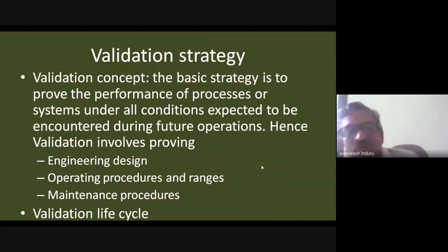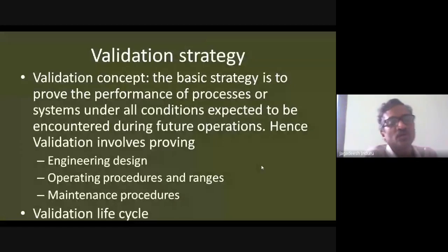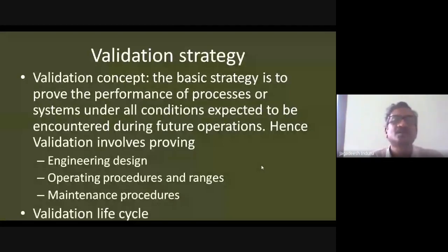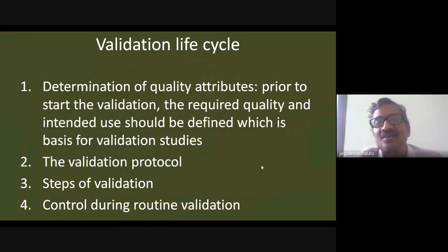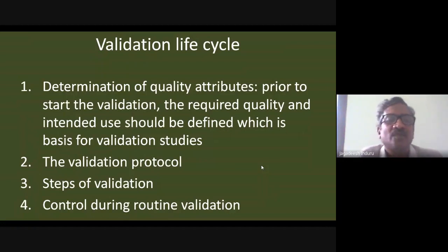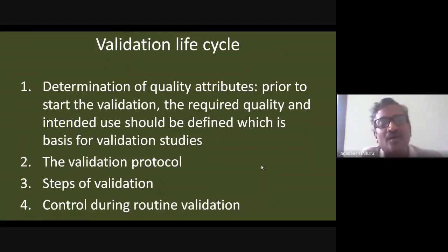The validation life cycle includes: DQ, IQ, OQ for proper design; maintenance procedures and change control; and a Validation Master Plan. Calibration is also important — equipment must be calibrated regularly, with calibration master plans written for equipment that drifts. In the validation life cycle, the first step is determination of quality attributes — for example, moisture content in drying or hardness in compression — defined before starting the validation life cycle.